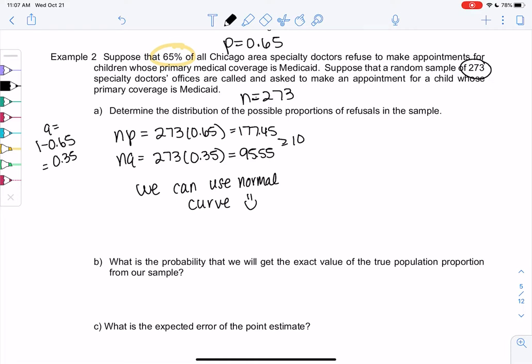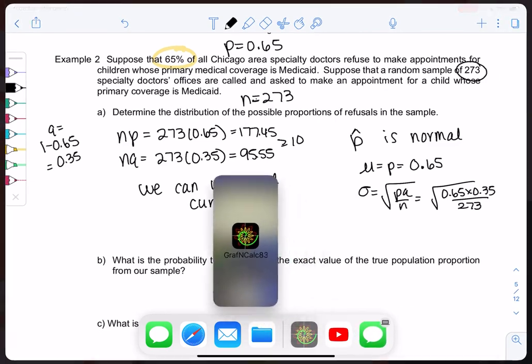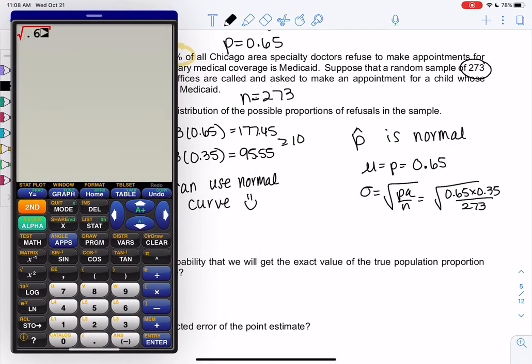So now that I know it's normal, let's find the mean and standard deviation. So P hat is normal. The average is just P, or 0.65. So on average, my sample should be 65%. And then the standard deviation will be square root PQ over N. So we'll take the square root of P, 0.65, times Q, 0.35, divided by 273. And make sure they're all in the square root. And we get a standard deviation of 0.028868.